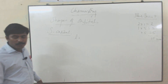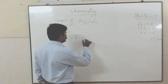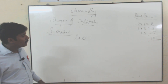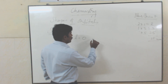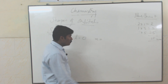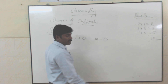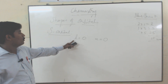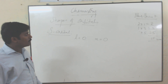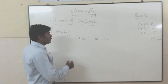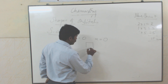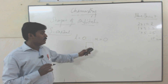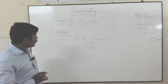For s orbital, l value is equal to 0. Azimuthal quantum number 0 means that is s orbital. When l is equal to 0, the magnetic quantum number m is also 0, because there is no orientation — only one orientation. Each and every orbital can hold a maximum of 2 electrons.